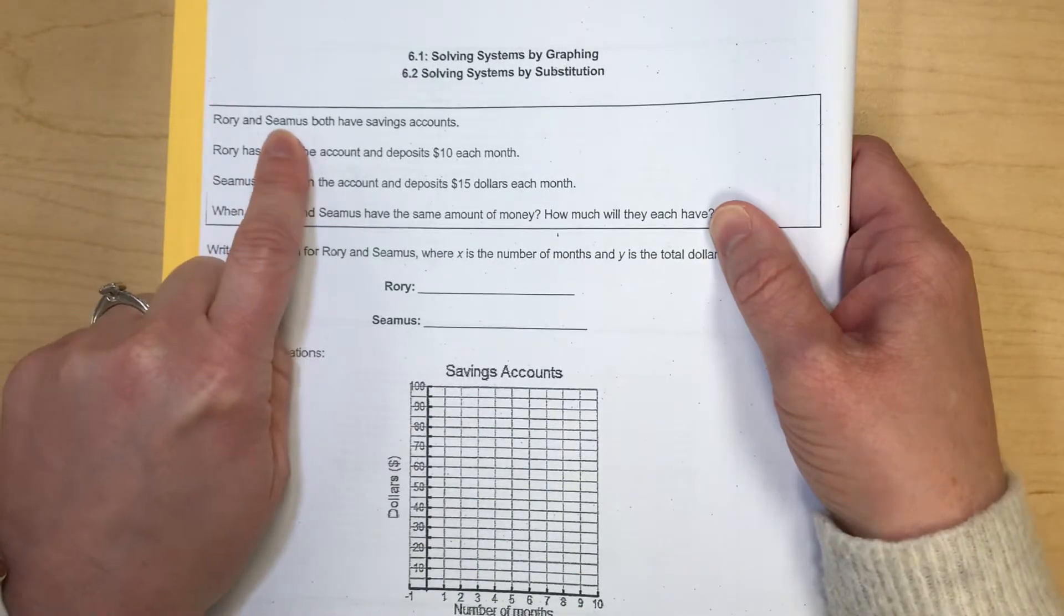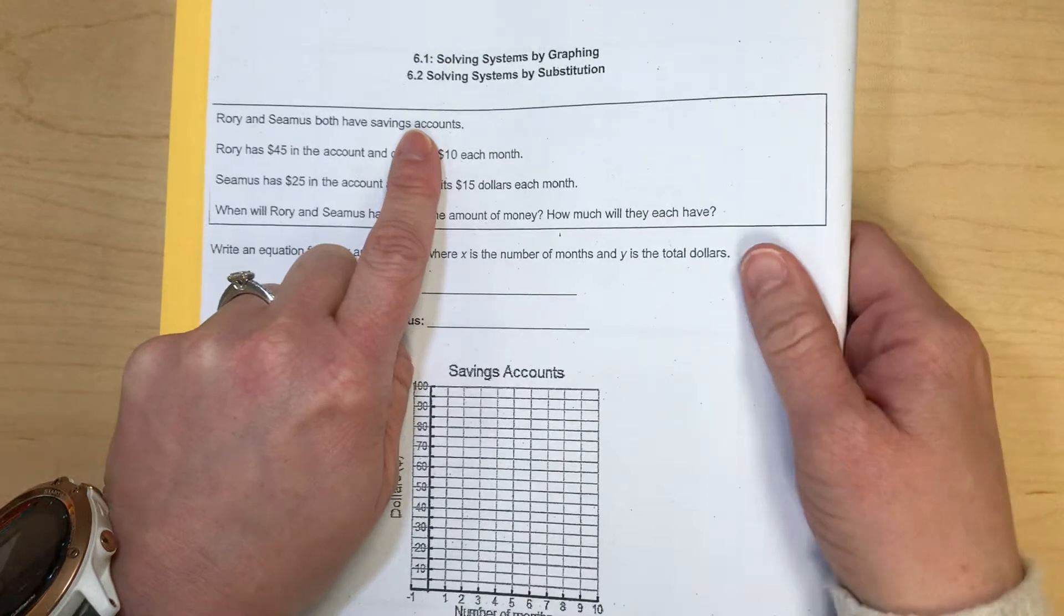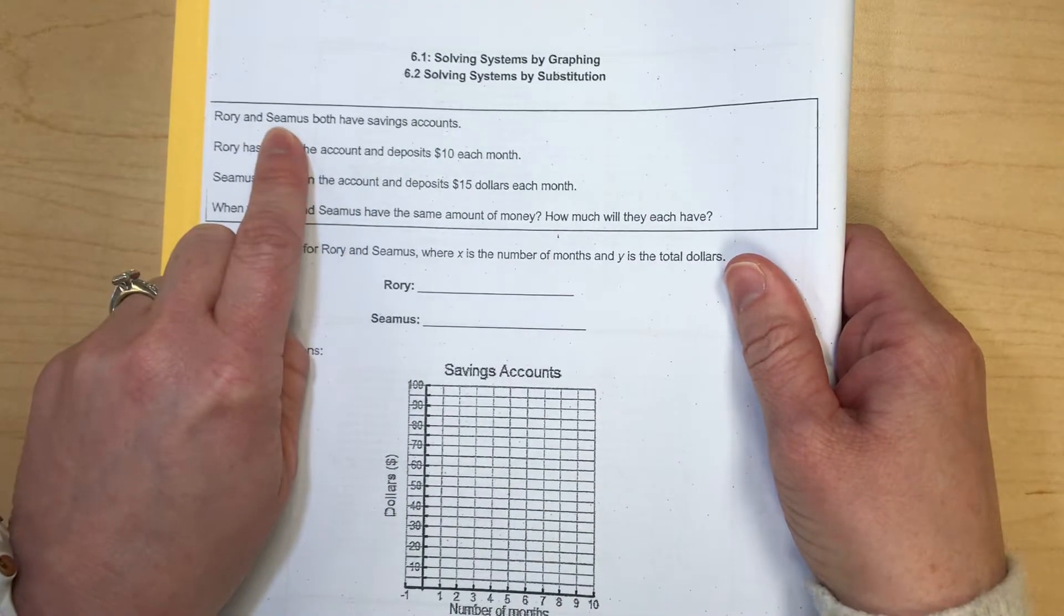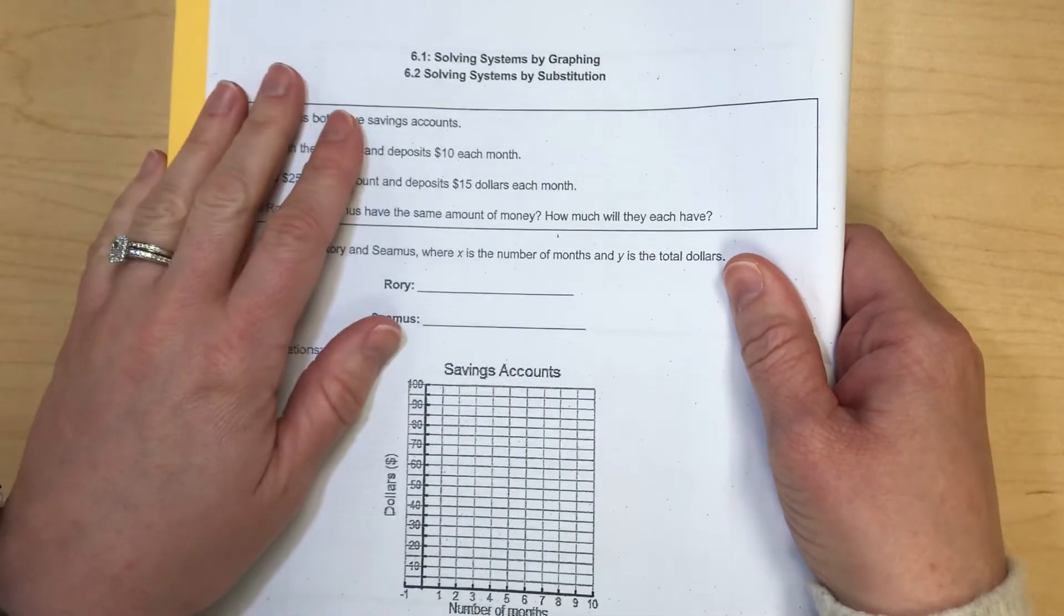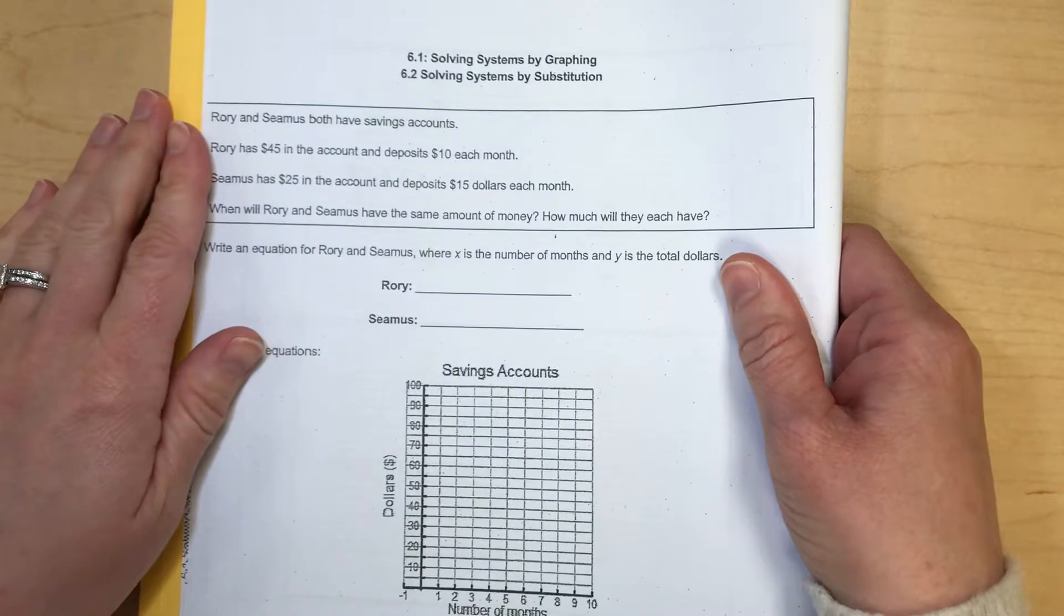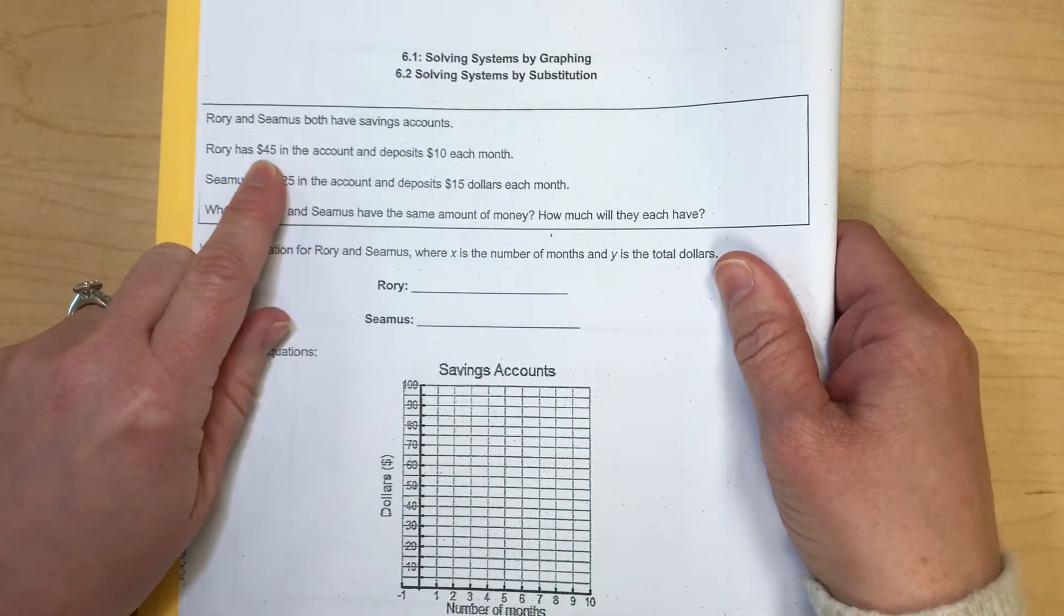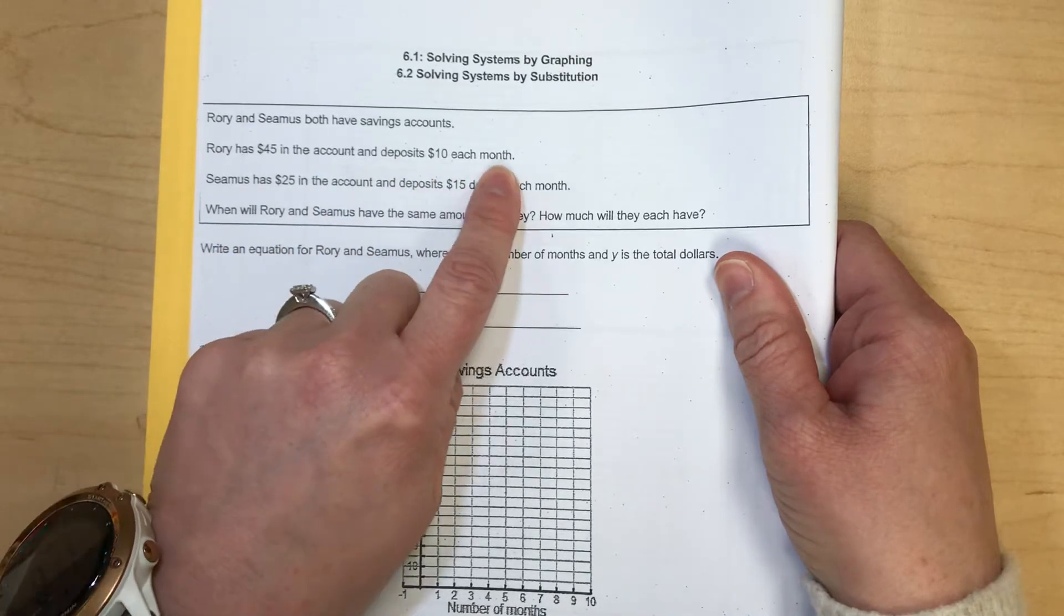Rory and Seamus both have savings accounts. Fun fact, if you know Mrs. Green, you got to go and say hi to her. She has a dog named Rory and her friend has a dog named Seamus. So she created this problem about her dogs. It's just so cute. Anyway, keep going. Rory has $45 in an account and will deposit $10 each month.